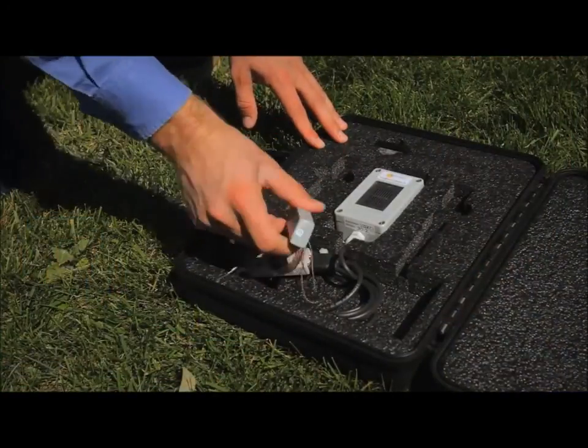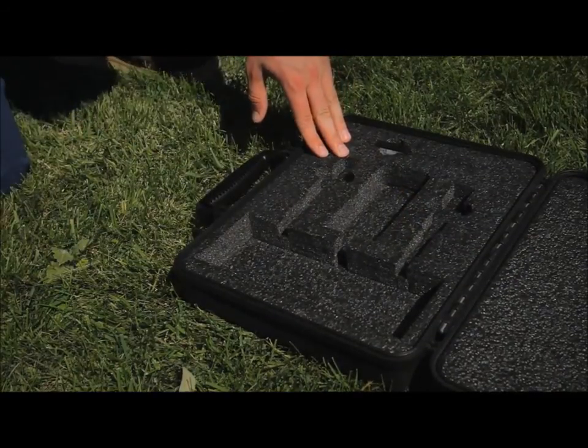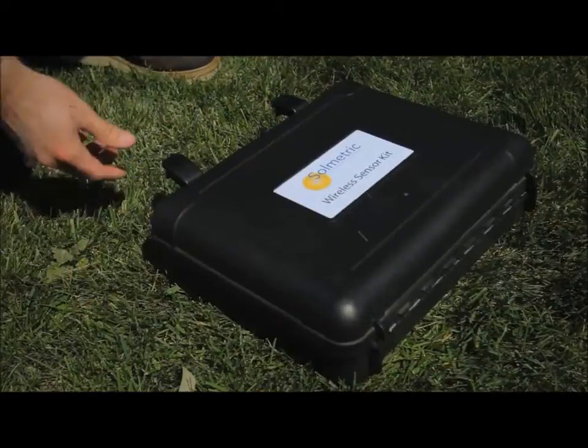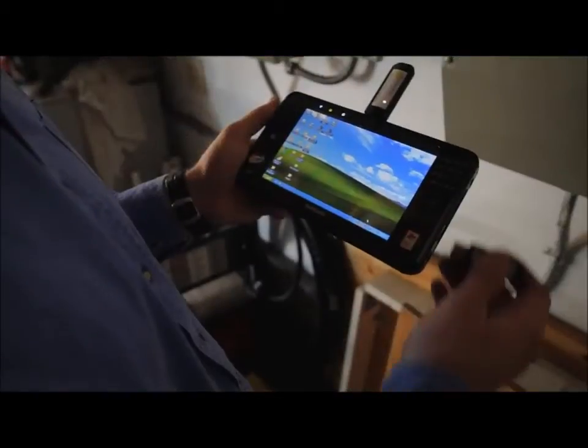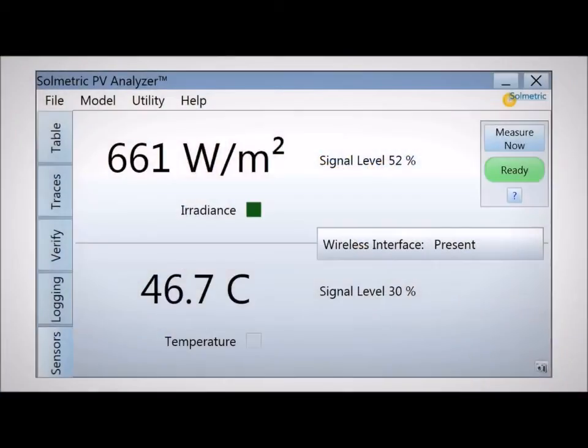The wireless PVA sensor kit includes an irradiance sensor and a thermocouple temperature sensor to provide nearly simultaneous irradiance and temperature inputs to the performance model. Both sensors interface wirelessly with the PC and readings are continuously updated in sync with the IV curve measurements.